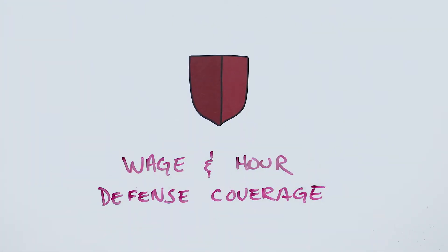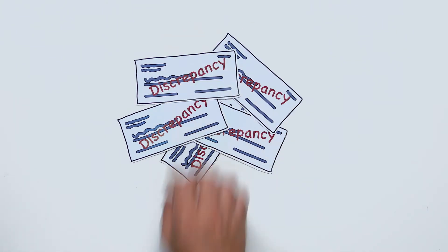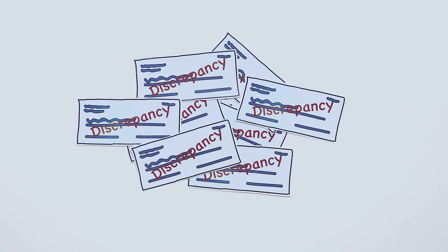It may also include wage and hour defense coverage, which will pay for things like attorney fees and court costs if you're sued for failing to pay overtime. It can also protect you if you misclassify a person or organization for wage and hour purposes.